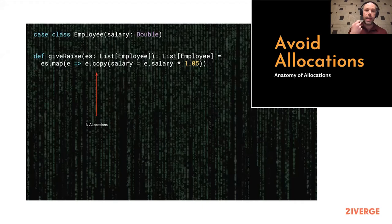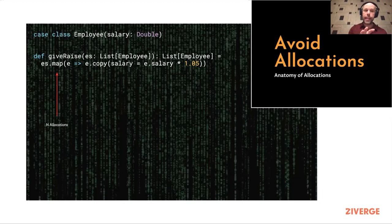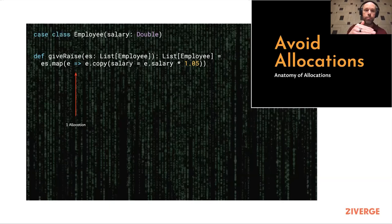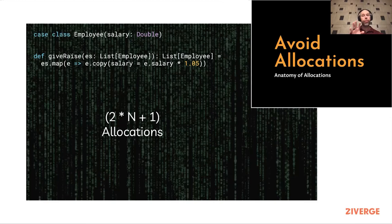In this particular bit of code, which gives all employees in a list raised salaries, there are multiple allocations. The 'copy' method on every case class creates a shallow copy, so executing it inside a 'map' on a list of length N gives N allocations. The 'es.map' instruction allocates roughly N more structures. Finally, there's the allocation of the lambda function itself — allocated once per function call. In total, this code does 2N + 1 allocations.